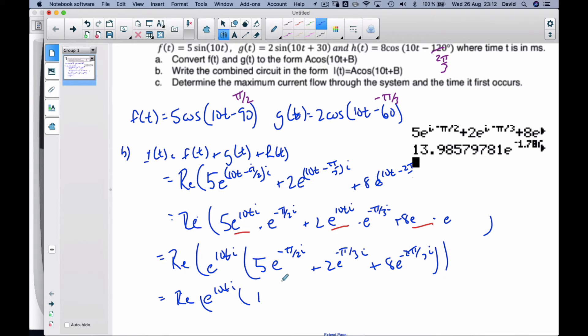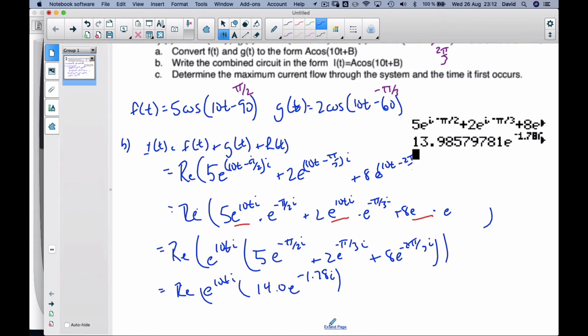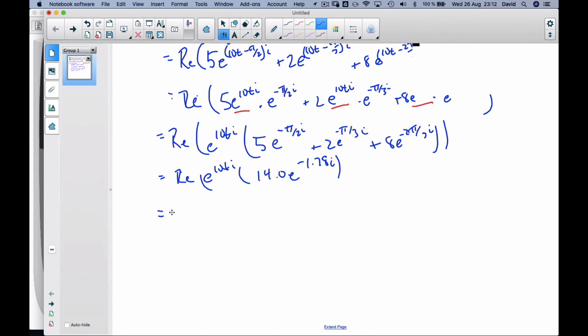well, that's 14e^(-1.78i). And so this is another number. I'm going to put them together. Or I can say the real number of 14e^(10ti - 1.78i).